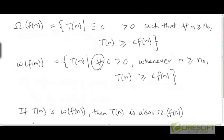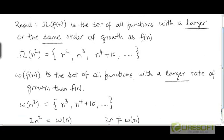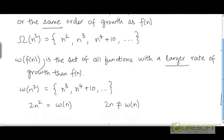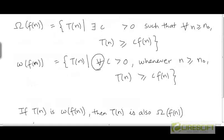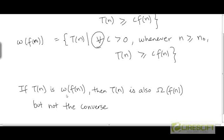It should be clear from these definitions that if a function is in the set little omega of f(n), it must also be in the set big omega of f(n), because big omega of f(n) is really a superset of little omega of f(n). In addition to the functions in little omega of f(n), big omega of f(n) contains functions that have the same rate of growth as f(n). So if t(n) is in little omega of f(n), then it's in big omega of f(n) as well. But the converse is not true — you could have a function in big omega of f(n) which is not in little omega of f(n).